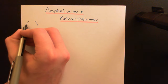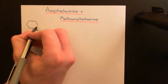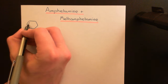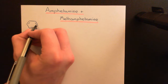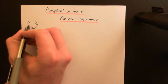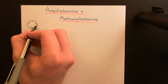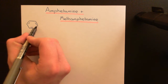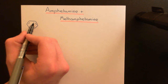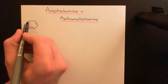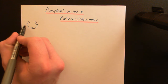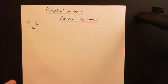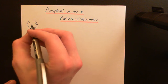So now let's draw the skeletal formula for amphetamine. One of the major things in its structure is a benzene ring, so I'll start by drawing that here. A benzene ring is a six-membered carbon ring with alternating double and single bonds between those carbon atoms. In pure benzene, off each of these six carbons you'd have a hydrogen atom, which we wouldn't show because we're drawing a skeletal formula and you don't show hydrogen atoms coming off carbon atoms in skeletal formulae.